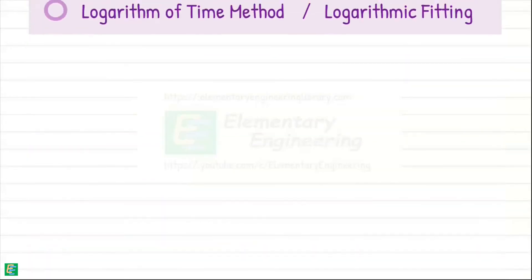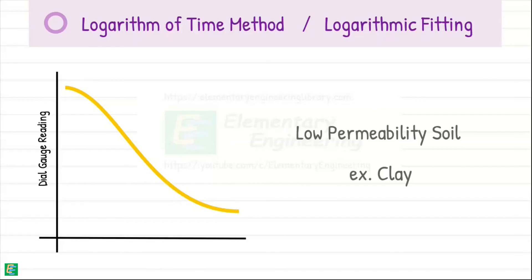Conversely, the logarithm of time method is better suited for low permeability soils like clays, which consolidate much slower and require a different approach to account for the extended time frame. So, we use log scale of time on one of its axes.